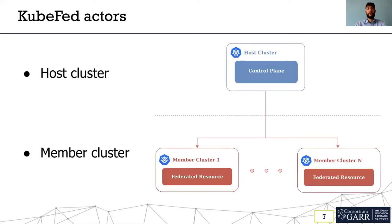In KubeFed we have two actors: the host cluster and the member cluster. The host cluster has the managing role inside the Federation — in this cluster we can install and configure the control plane, and for a single federation we have one host cluster. The member cluster has the executive role. When we deploy a resource, the resource is instantiated in the member cluster. We can have many member clusters created also in different regions of the cloud.